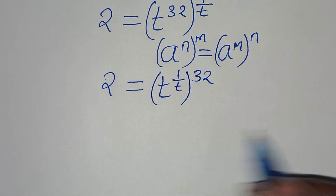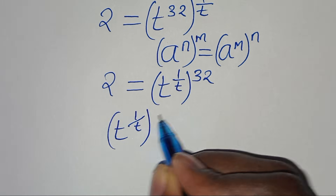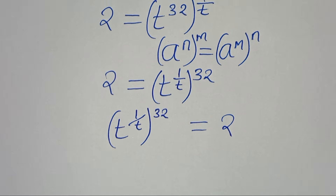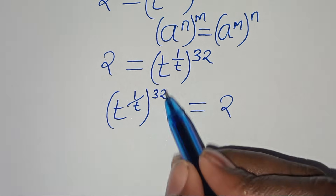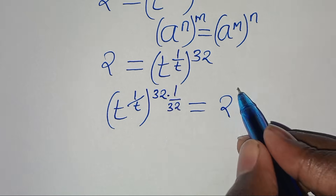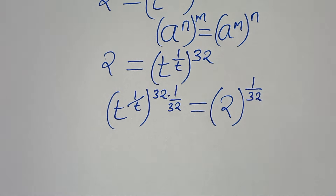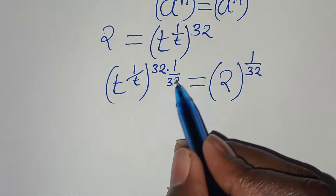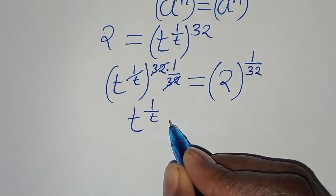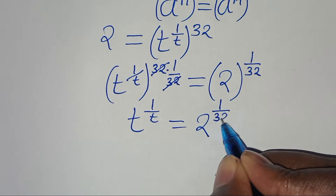So we have t to the power of 1 over t, raised to the power of 32, equal to 2. The next step is to raise both sides to the power of 1 over 32. We simplify 32 and 32, so that we have t to the power of 1 over t, equal to 2 to the power of 1 over 32.